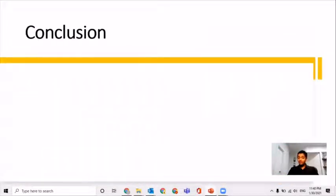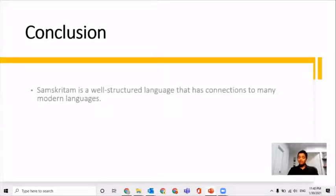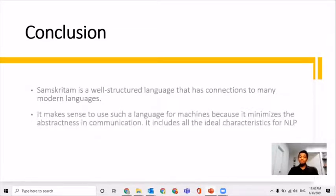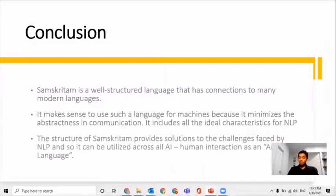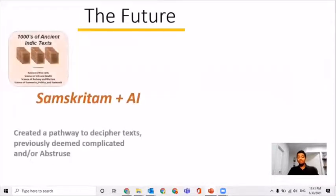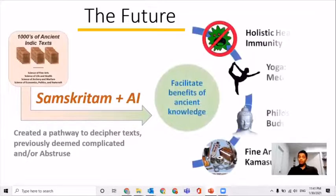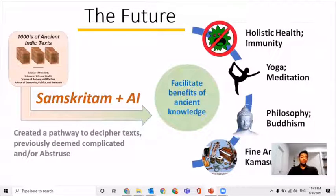Sanskritam is a well-structured language that has connections to many modern languages. It makes sense to use such a language for machines because it minimizes the abstractness in communication and includes all the ideal characteristics for natural language processing. The structure of Sanskritam provides solutions to the challenges faced by NLP, so it can be utilized across all of AI. Sanskritam addresses all five of the primary challenges faced in NLP, and therefore can be seen as a language for natural language processing and artificial intelligence. Recent trends show Sanskritam is on an uptick, allowing AI and machine learning to be used in broader fields.